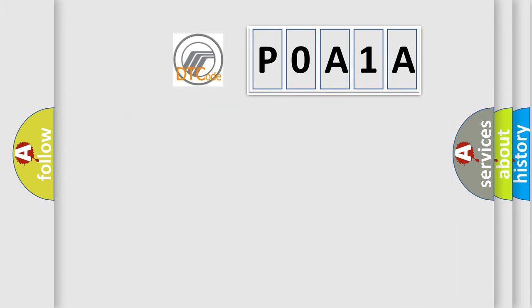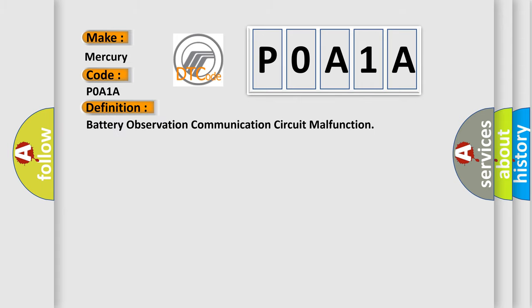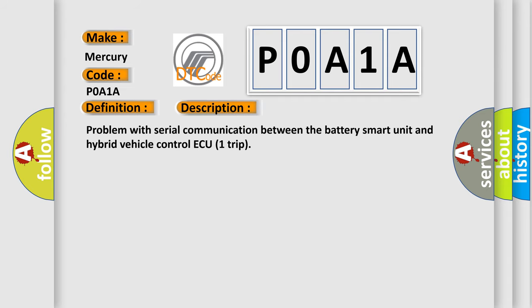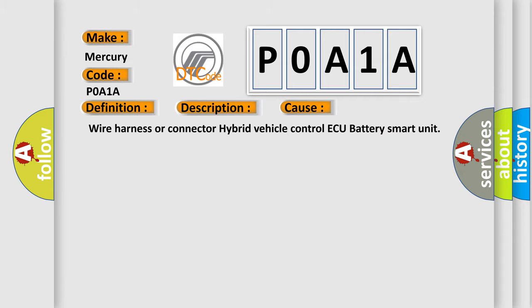What does the diagnostic trouble code P0A1A interpret specifically for Mercury car manufacturers? The basic definition is Battery Observation Communication Circuit Malfunction. This is a short description: a problem with serial communication between the battery smart unit and the hybrid vehicle control module. This diagnostic error occurs most often due to a fault in the wire harness or connector between the hybrid vehicle control module and the battery smart unit.